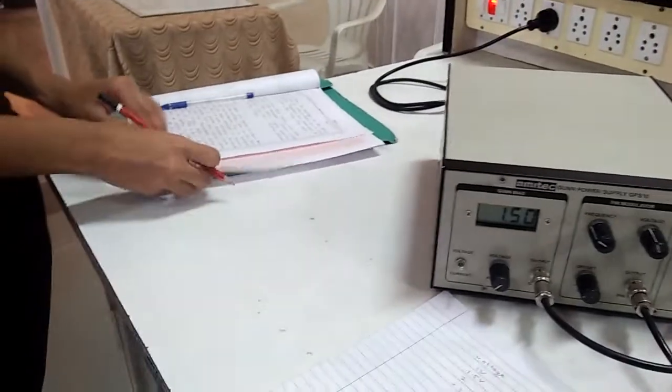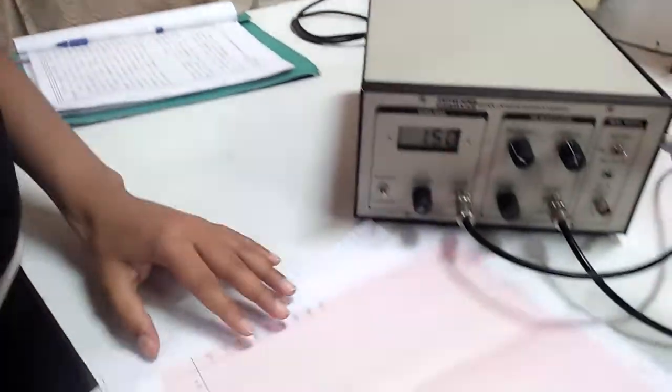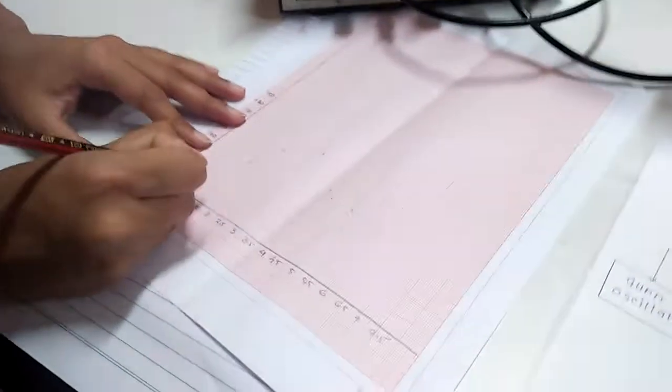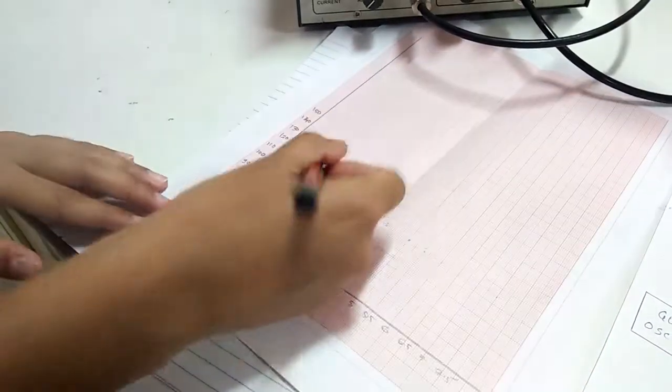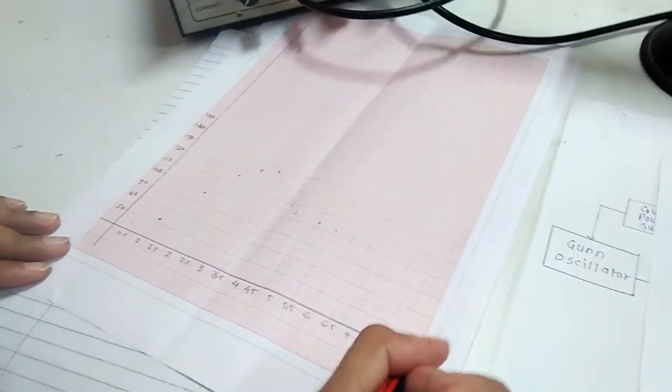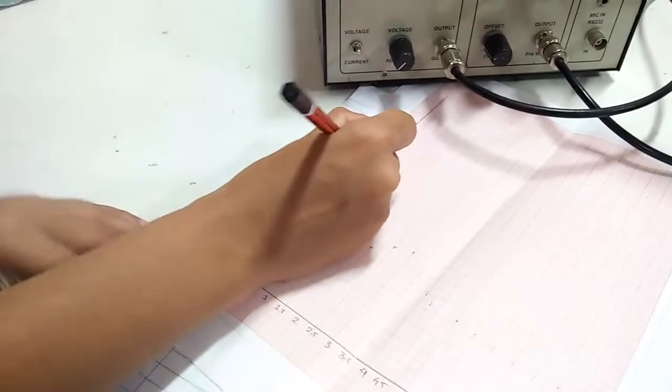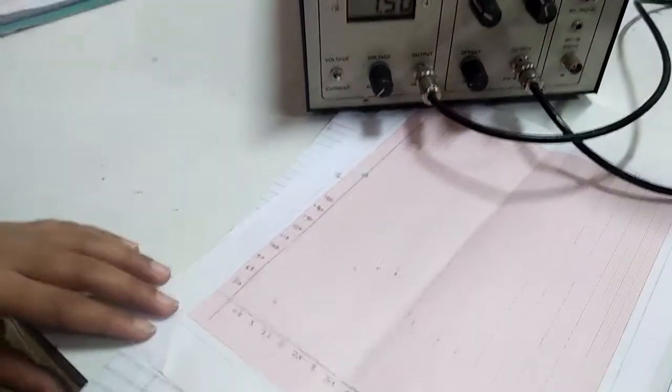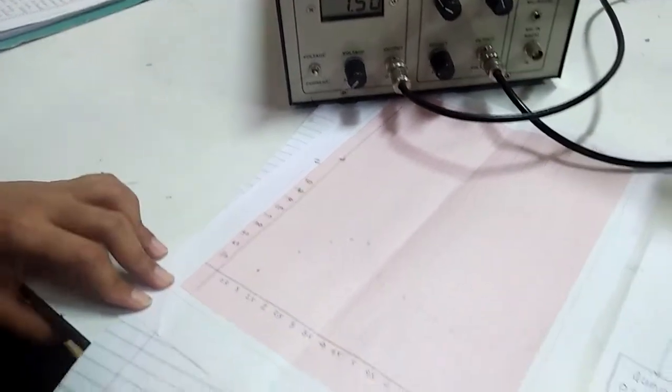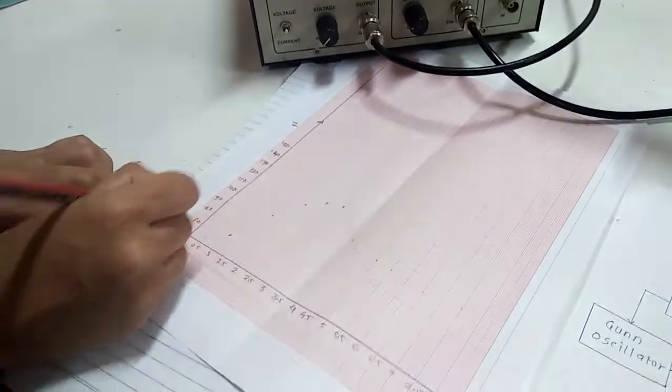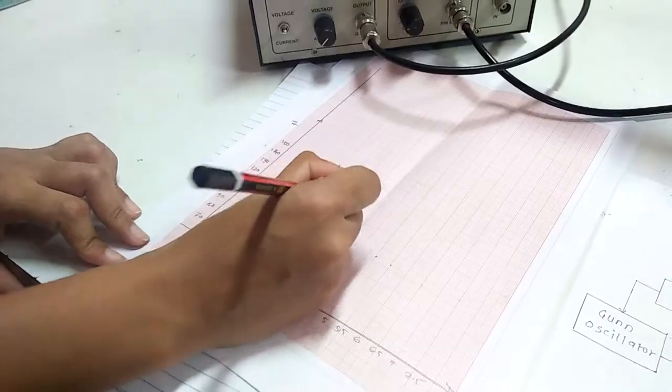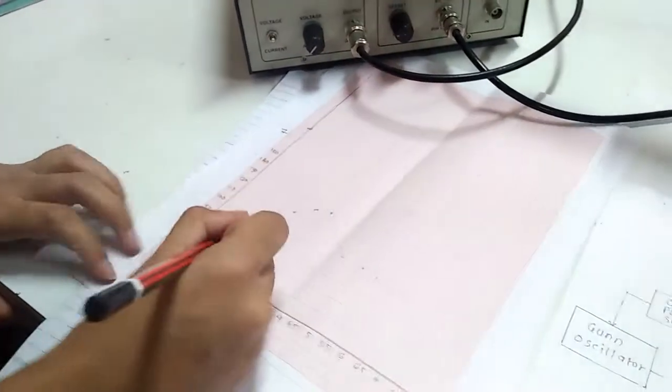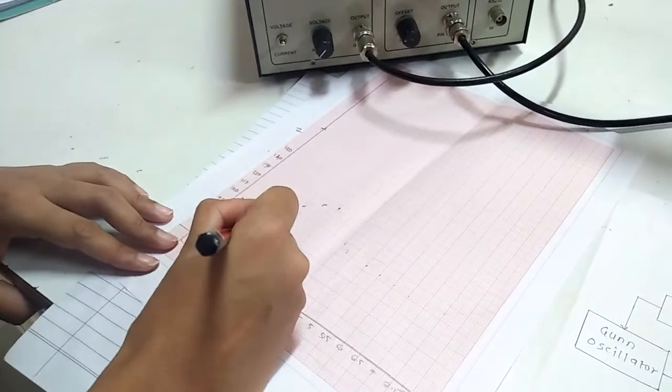Now we will plot graph for this. The x-axis shows voltage while the y-axis shows current by taking proper scale. Now we will plot our readings on graph and join the obtained points.